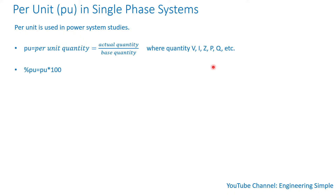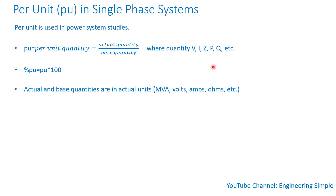If you have a per unit value and want to obtain the percentage, just multiply the per unit value by 100. Actual and base quantities are in actual units — MVA, volts, amps, ohms, etc.